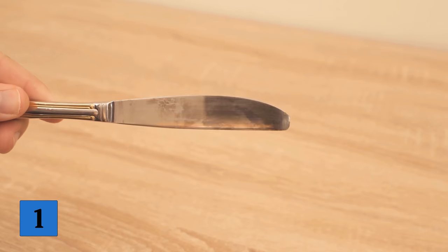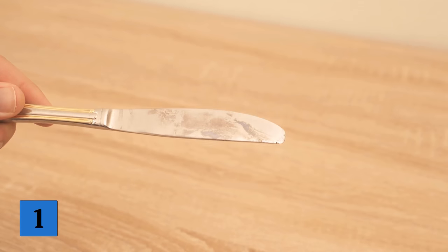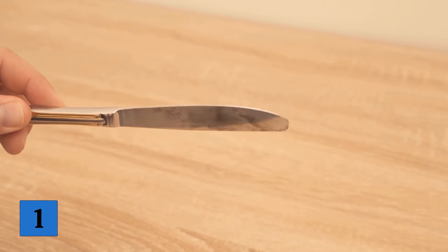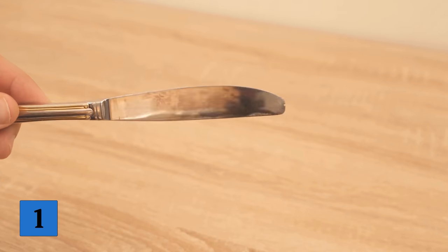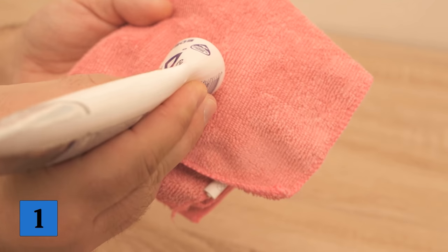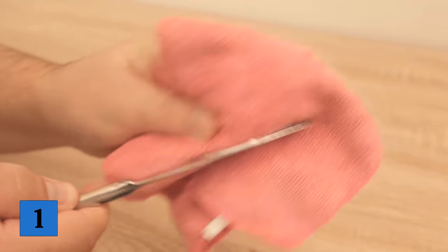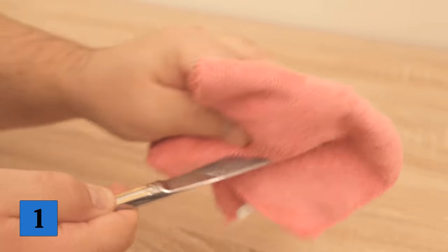Because surely you also have cutlery which is no longer so nice, shiny, or maybe even a little stained like this one. All you need to clean it is some toothpaste. Because of the ingredients it contains, it's perfect for making it all shine again. I put a little toothpaste on a small cloth and start polishing the cutlery.